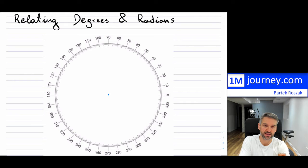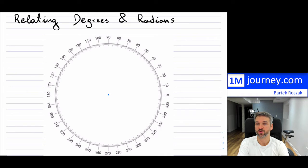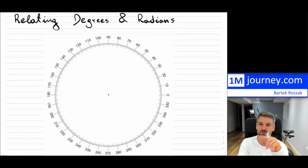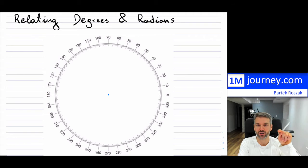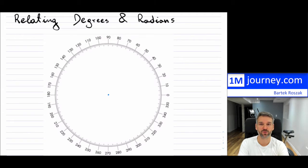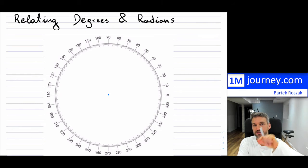It doesn't have to be measured that way — you can set a different convention — but in school, this is typically what we do. The goal of this video is to take your degree measurements and introduce you to the equivalent arc length on the circle, which is measured in radians for a unit circle, where the radius is equal to one.